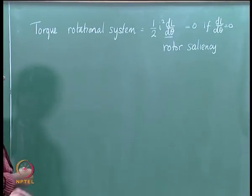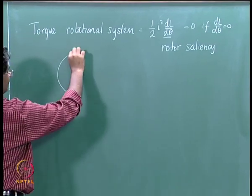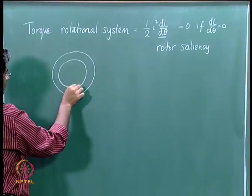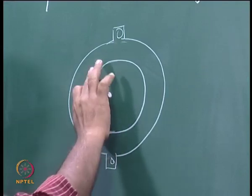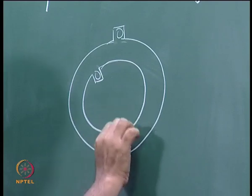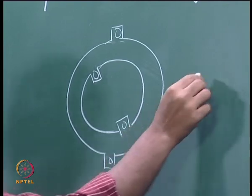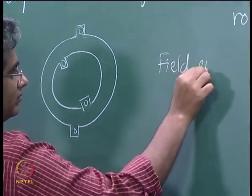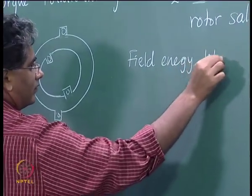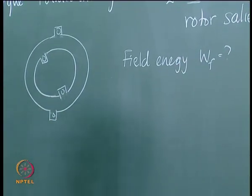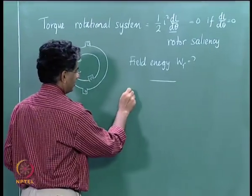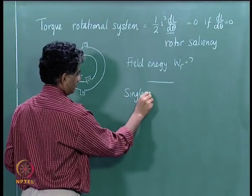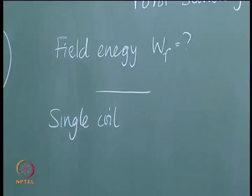We started looking at a system where both the stator and rotor are cylindrical. The stator has one coil and the rotor also has one coil. We wanted an expression for the field energy WF of this system. Before we get to that system, let us look at a single coil and understand how we derive the field energy expression for it.